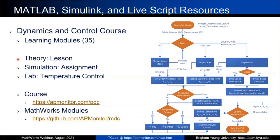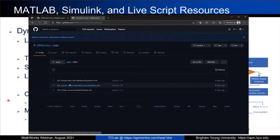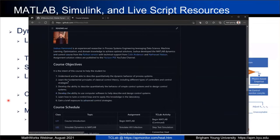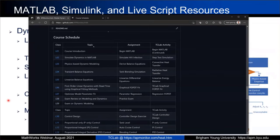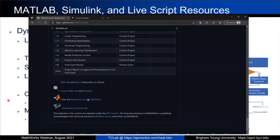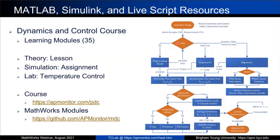We cover the theory, the equations, the fundamentals, have students simulate, then give them the TC Lab to work with real data through live scripts, Simulink modules, or MATLAB scripts. There's a course schedule where next to the MATLAB symbol you'll see the live scripts available. There's also a GitHub archive. The schedule lists theory, simulation, and lab exercises for each of the 35 modules. You can download everything from MATLAB Online. You're welcome to use it, modify it, and republish however you'd like — it's listed under the MIT license, open source and freely available.